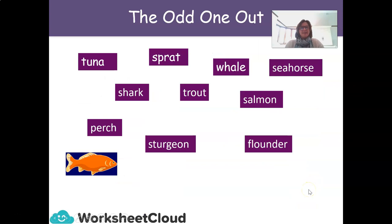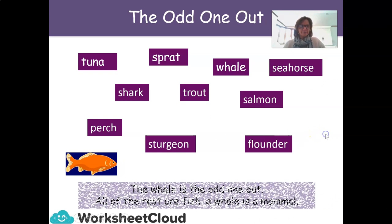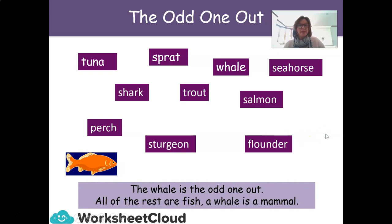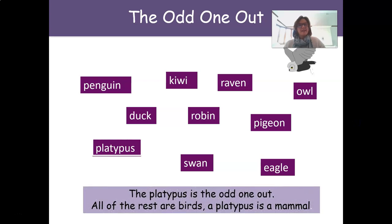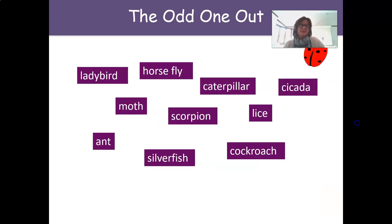Now for a little quiz — which is the odd one out? Looking at a list including whale, the answer is the whale. All of the rest are fish, but the whale is a mammal. Next, which is the odd one out? The platypus is the odd one out — all of the rest are birds, whereas a platypus is a mammal.